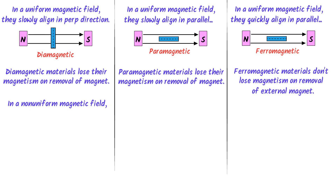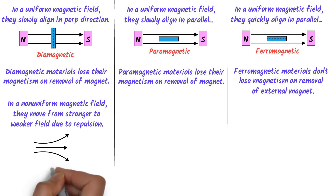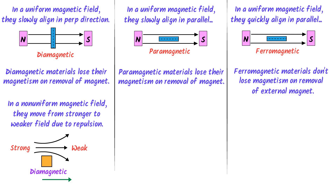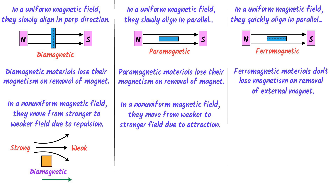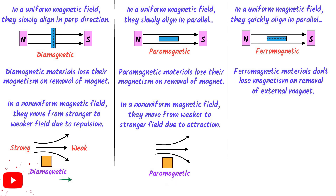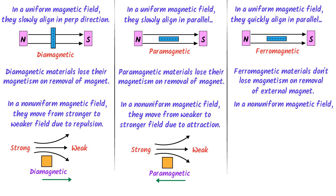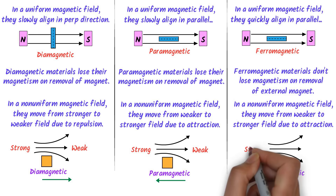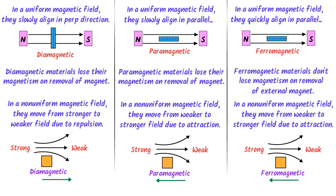Fifthly, in a non-uniform magnetic field, diamagnetic materials move from a stronger to a weaker field due to repulsion. For example, in a non-uniform magnetic field, diamagnetic materials move from a stronger to a weaker field. While paramagnetic materials move from a weaker to a stronger field due to weak attraction. While ferromagnetic materials move from a weaker to a stronger field due to strong attraction.